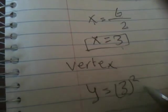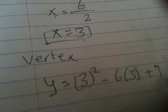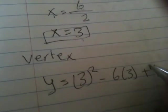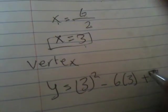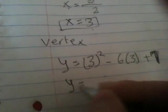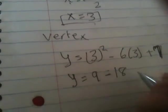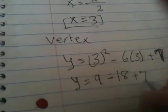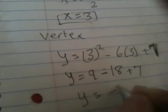We know y = 9 - 18 + 7. So y equals -9 + 7, which equals -2.